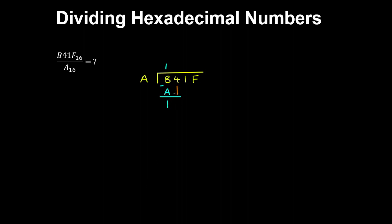And now we bring down the 4. So 14 in hexadecimal is 20 in decimal. So 10 goes into 20 twice.